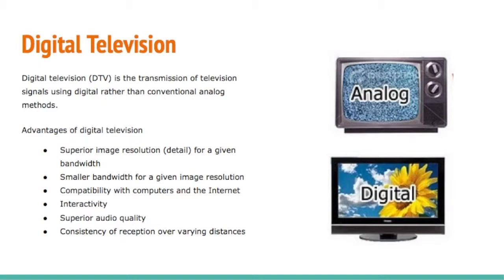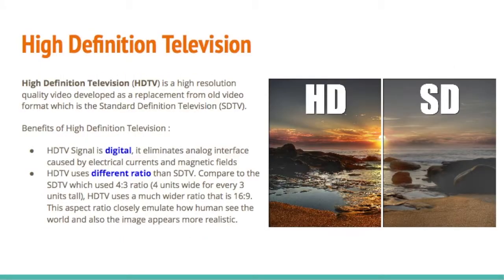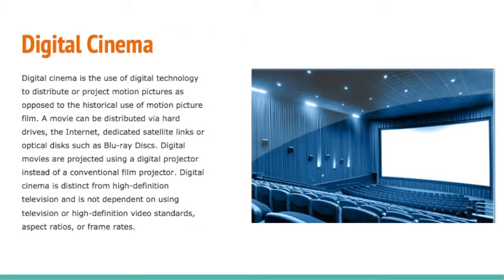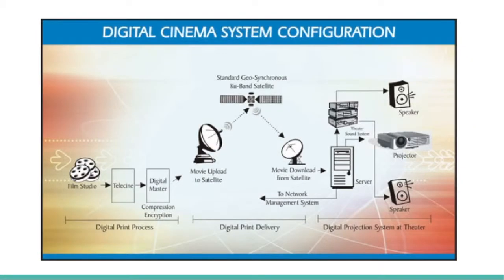Digital television is the transmission of television signals using digital rather than conventional analog methods. High-definition television (HDTV) is a resolution-quality video format developed as a replacement for the older standard-definition television format. Digital cinema uses digital technology to distribute or project motion pictures, as opposed to the historical use of physical film. Here is an image showing how a digital cinema system is configured.